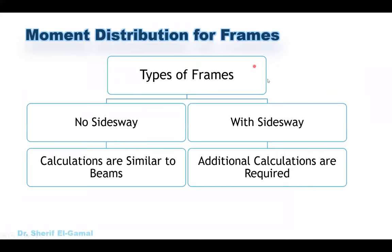First of all let's talk about the types of frames. We have two different types. The first one with no side sway, and the second one when we have a side sway. For the frames with no side sway, the calculations will be similar to the calculation of beams, so you can check previous videos on using the moment distribution method to analyze beams.